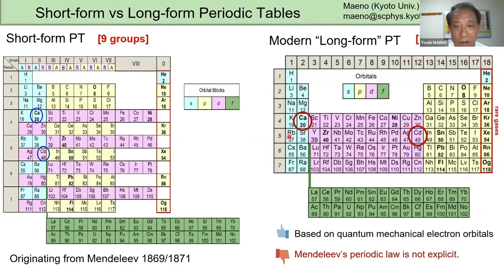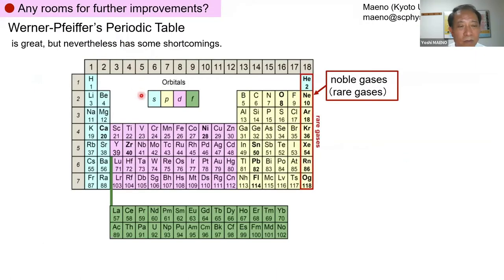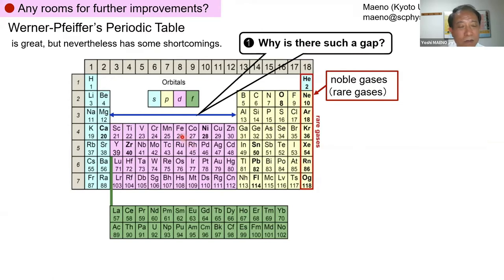Comparing the short form and the present-day long form: the long form IUPAC periodic table is based on quantum mechanical electron orbitals from the Bohr model — very logical and quantum mechanically correct. However, Mendeleev's periodic law is not so explicit anymore. Calcium and cadmium, both non-magnetic divalent ions, are no longer aligned together in the long form. So are there any rooms for further improvements in the modern Werner–Pfeiffer periodic table?